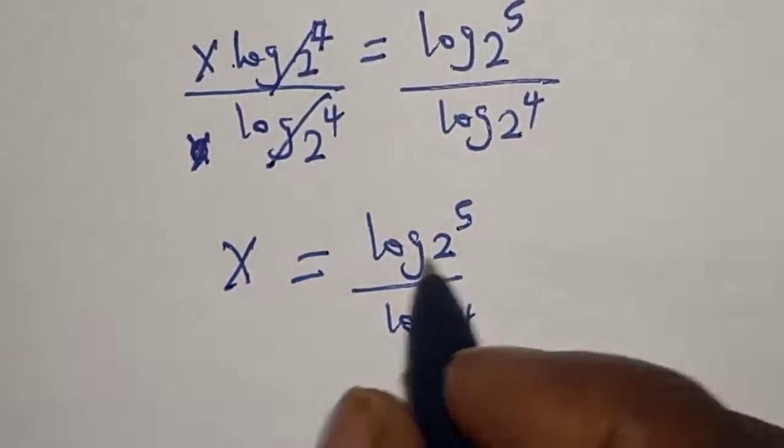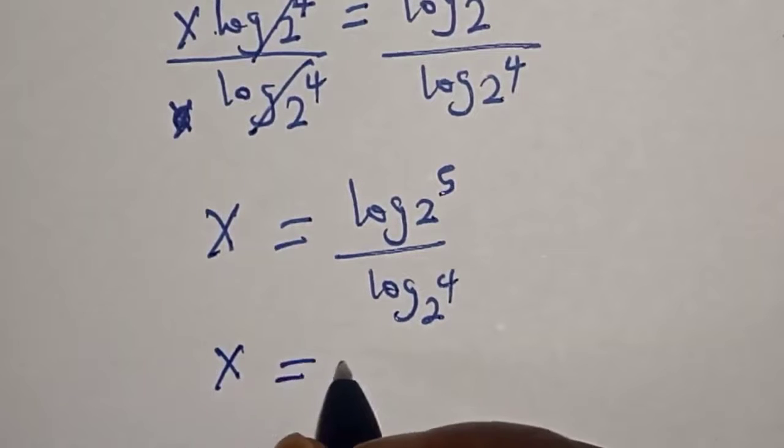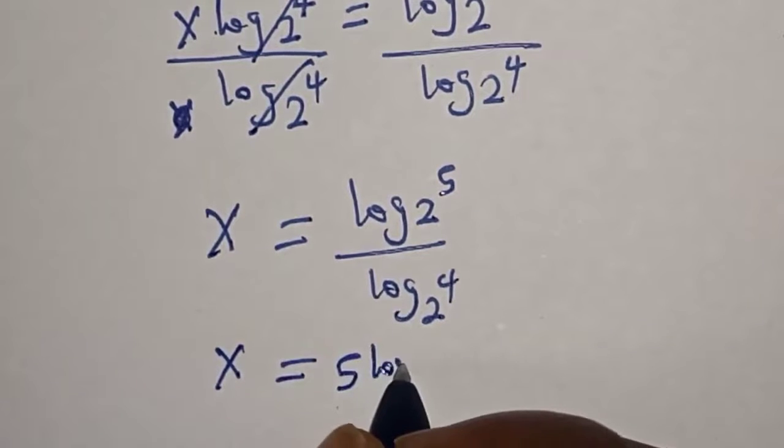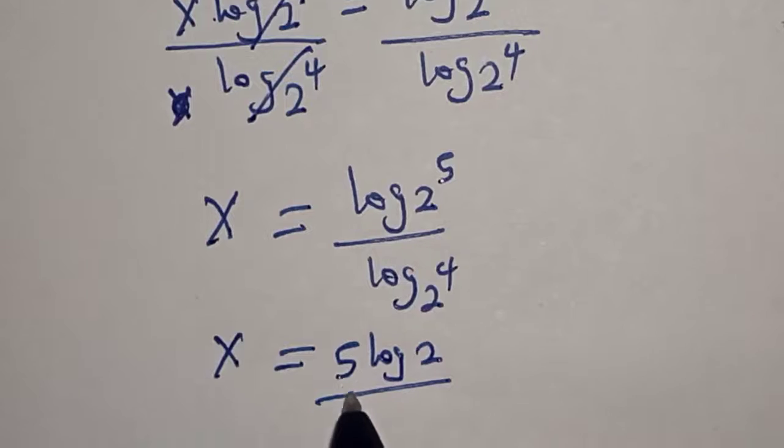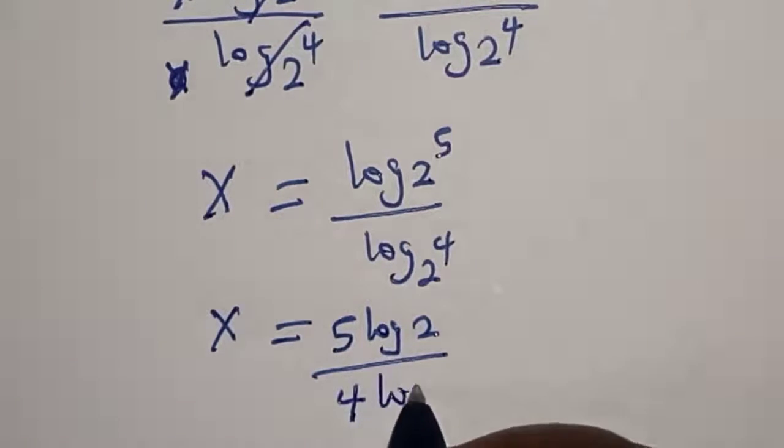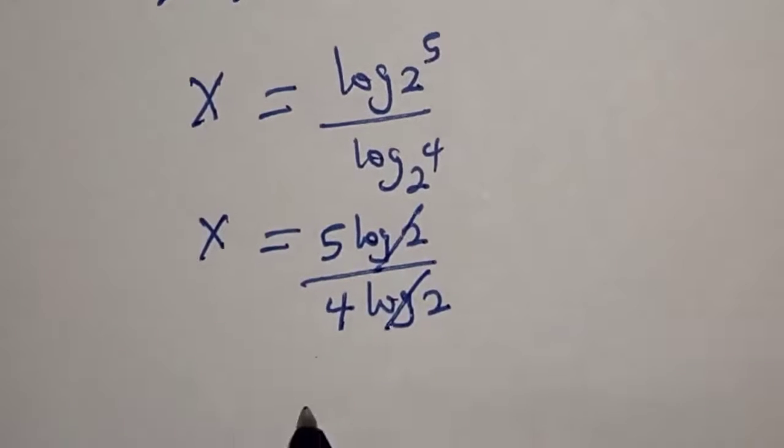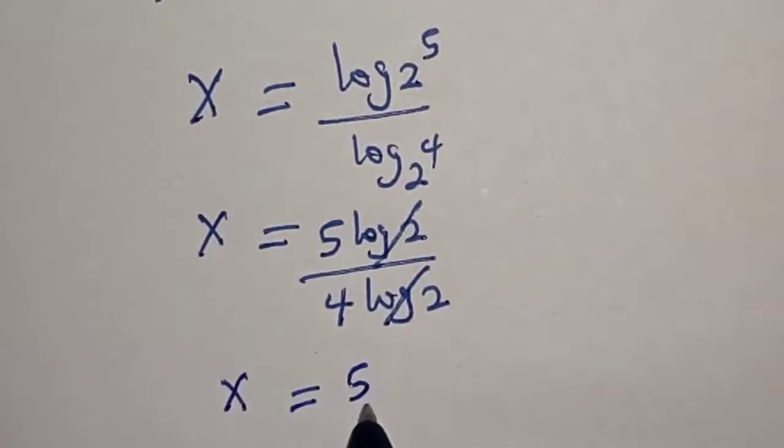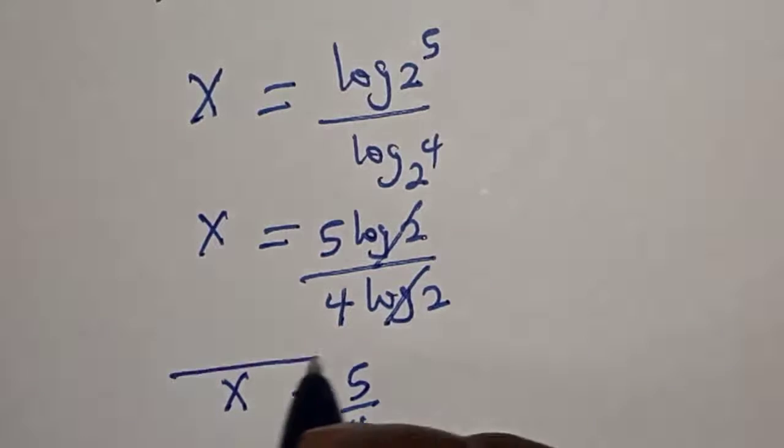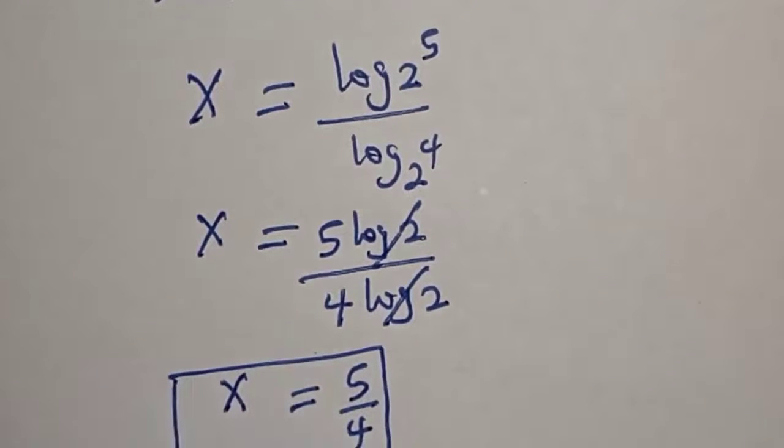Then s equals 5 log 2 over 4 log 2. This will cancel. s equals 5 over 4, and that is our final answer.